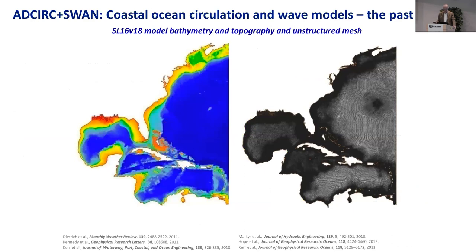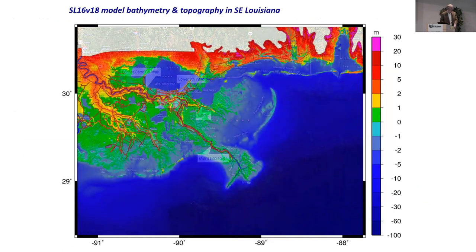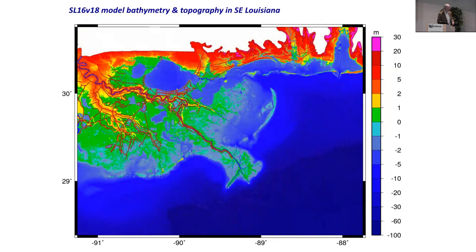SWAN and ADCIRC pass information locally. When you look at wall clock time versus number of cores on a log-log plot, you get this linear reduction in runtime, which is what you want. A typical model might look something like this — the East Coast model focused on Southern Louisiana. You can see in yellow and orange the continental shelf, with the grid much larger in the deep ocean than on the continental shelf, and focusing in on Southern Louisiana, you can provide a lot of resolution for southeastern Louisiana, New Orleans, the Mississippi River Delta, etc.